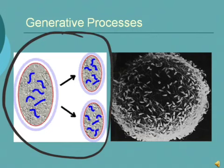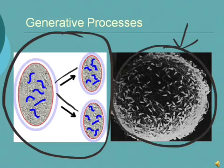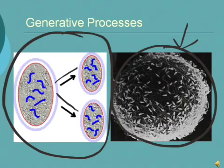The first picture shows asexual reproduction — one cell that splits into two identical cells. That cell could be a bacterium, a protozoan, or one of your skin cells. Asexual reproduction happens in our body for growth. The picture on the right shows a large egg surrounded by sperm — that's sexual reproduction. One egg fuses with one sperm, so one plus one equals one: two things combine to make one.